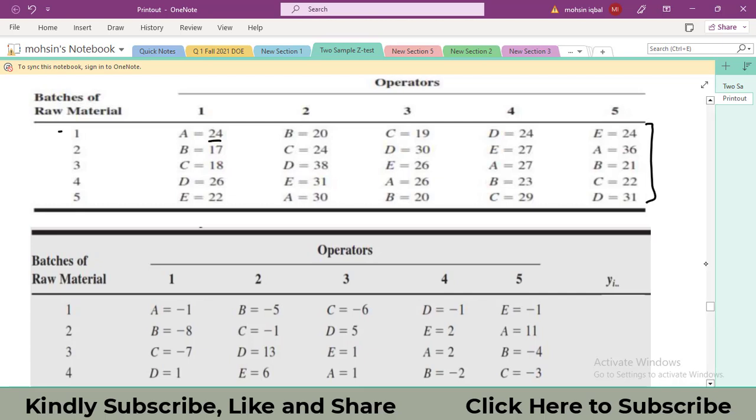However, these values are quite large: 24, 38, 31. It will be quite difficult for you to perform the calculations either using the calculator or manually without calculator. So we will do the coding of this original data. This coding of original data doesn't affect our results; it doesn't affect our F naught values.